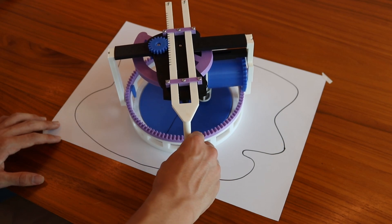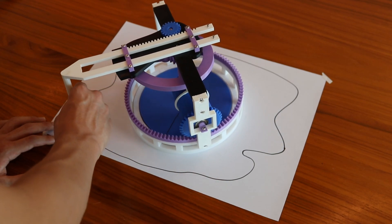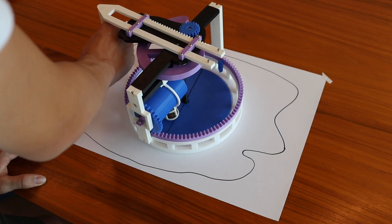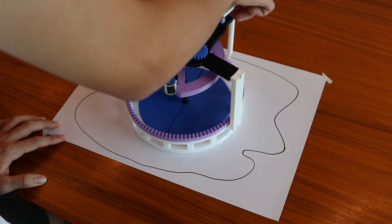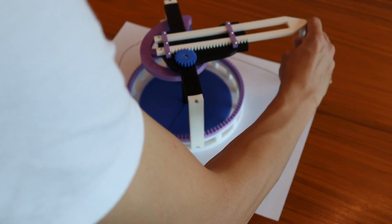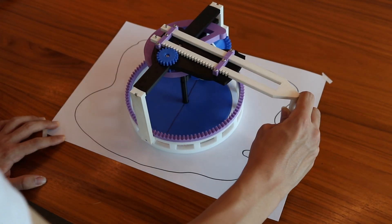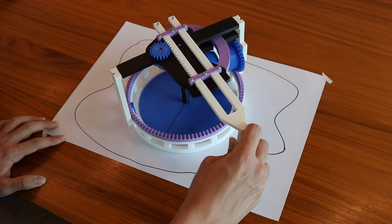The way it works is by tracing the perimeter of the shape you want to find the area of. You'll move all of these mechanisms inside the device, and at the end, a dial on the device will tell you the area of the shape that you just traced.